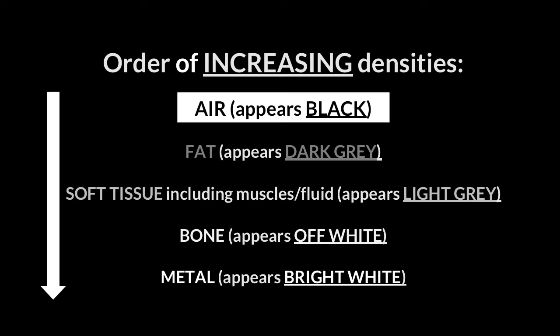Air appears black on a chest X-ray because it is the least dense structure, meaning nearly all X-rays pass through it. As density increases down the list, metal appears bright white because it is super dense — little to no X-rays can pass through it. So the most relevant physics you need: less dense objects appear black; more dense objects appear white on an X-ray.